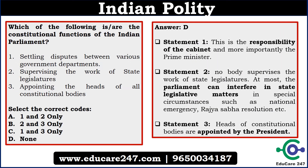The answer is that none of them are correct. Statement 1 says disputes between government departments are settled by Parliament — that is wrong; it is settled by the Cabinet, basically the Prime Minister. Statement 2 says Parliament supervises the state legislature — that is also wrong; nobody supervises the state legislature. At most, Parliament can interfere in state legislature matters in special circumstances like national emergency or when the Rajya Sabha passes some resolution. Statement 3 is also wrong because heads of constitutional bodies are appointed by the President. Keep all these points in mind.